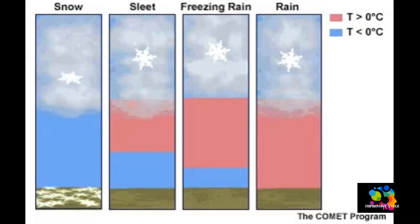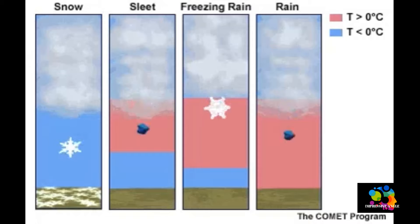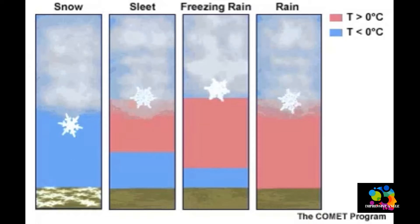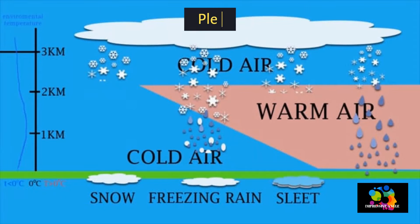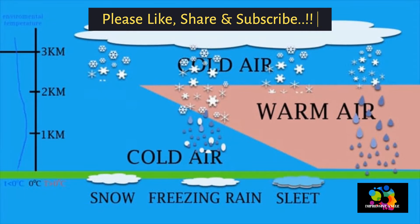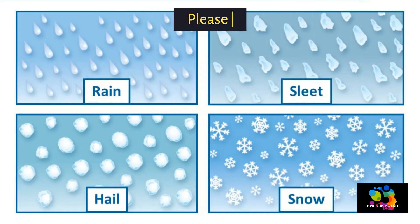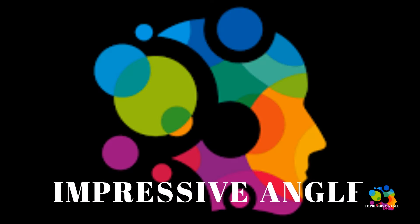These are the main forms of precipitation. Hope from now whenever you see any of these forms, you will understand the reason behind it. Hope you like my video. If you like it, please like and share it with your friends. For more interesting videos, subscribe to my channel. Thank you.